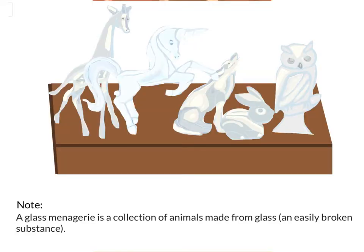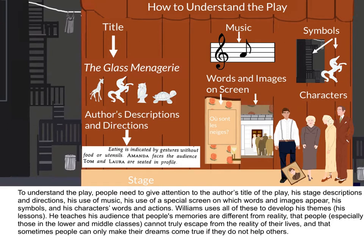A glass menagerie is a collection of animals made from glass, an easily broken substance. To understand the play, people need to give attention to the author's title, his stage descriptions and directions, his use of music, his use of a special screen on which words and images appear, his symbols, and his characters' words and actions. Williams uses all of these to develop his themes — his lessons.